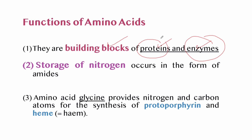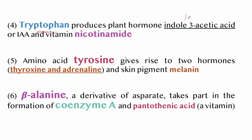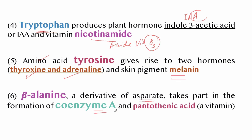The functions of amino acids include: they are the building blocks of proteins and enzymes. Storage of nitrogen occurs in the form of amides. Glycine provides nitrogen and carbon atoms for the synthesis of protoporphyrin and heme; porphyrin is the immediate precursor to heme, which is critical for hemoglobin and chlorophyll. Tryptophan produces the plant hormone indole-3-acetic acid (IAA) and vitamin nicotinamide — the amide form of vitamin B3 (niacin).